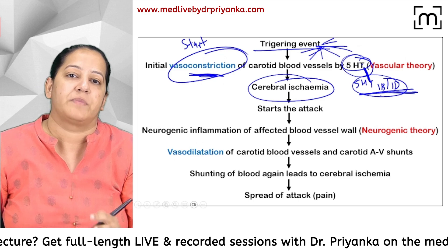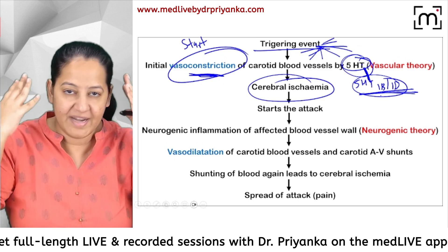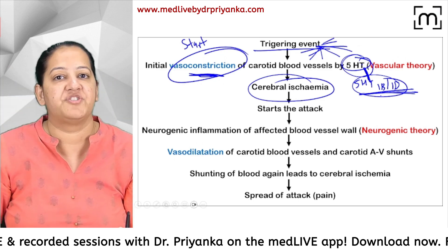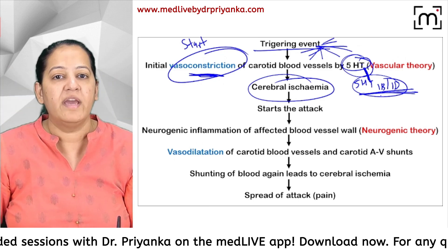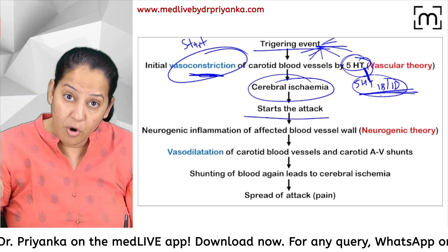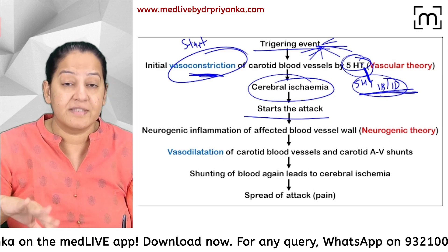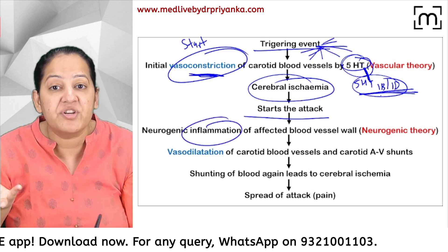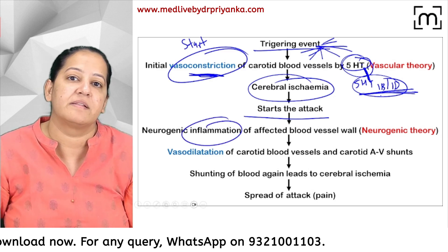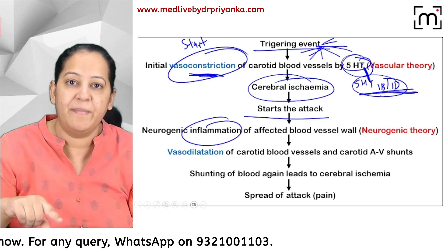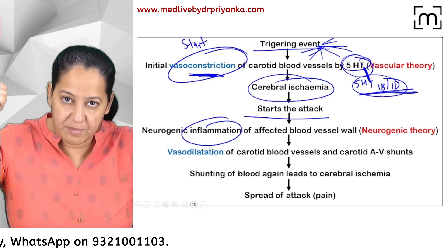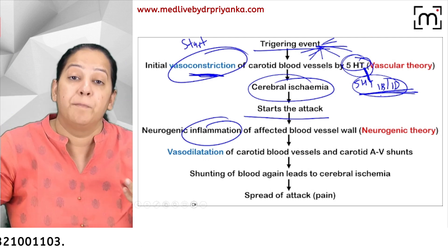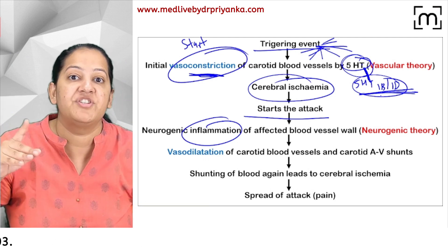Since the arteries are vasoconstricted, there is cerebral ischemia — the brain is not getting adequate blood. Because of the ischemia, as a compensatory mechanism, inflammation occurs in the blood vessel — there is neurogenic inflammation in that area.